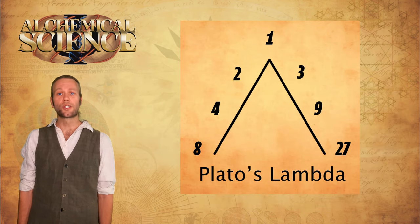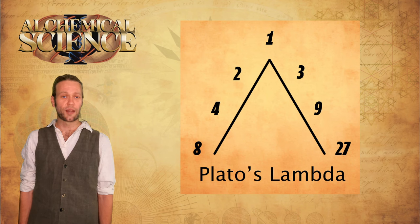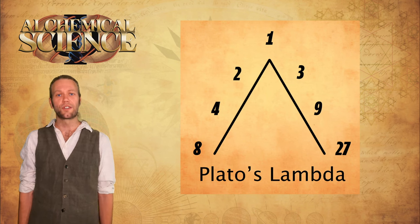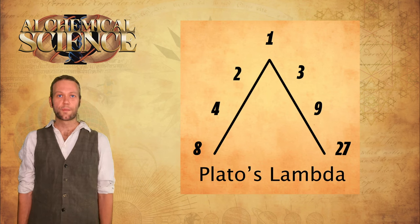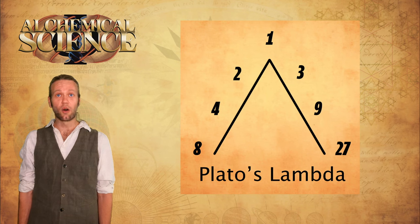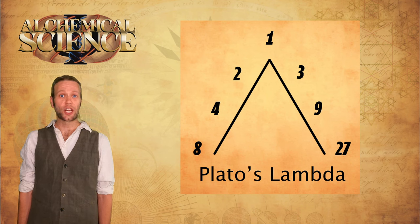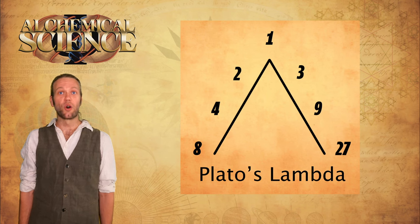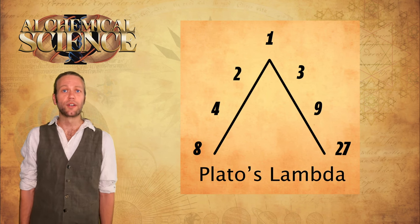This is what Ed refers to as the lambda sequence, as hinted at by Plato in his book Timaeus. We could refer to it simply as the doubling and tripling sequence. Plato places the two number sequences on each leg of an inverted V, the shape of the 11th letter of the Greek alphabet. Plato claimed that God used this sequence of numbers to create the cosmic soul.